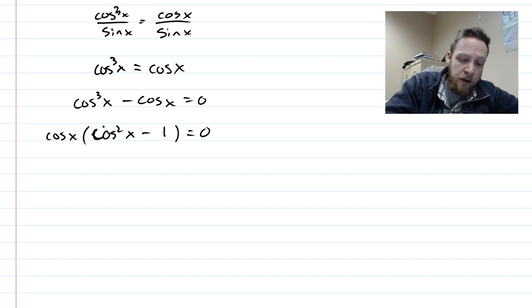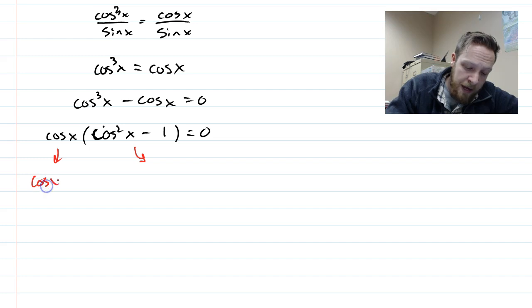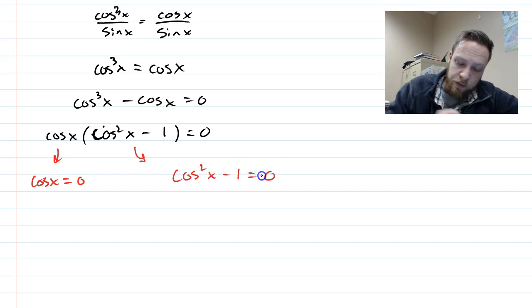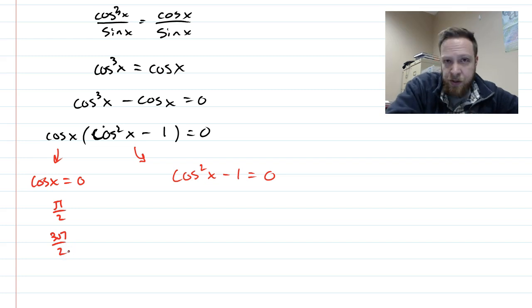But once it's factored, you're going to use the zero product property. If it's equal to 0, then each of these factors tells us different answers. So, we're asking, when is cosine of x equals 0? Also, when is cosine squared minus 1 equals 0? So, we're going to have a lot of answers. When is cosine of x 0? Thinking of your unit circle, that would be at pi over 2. And then the other answer would be at 3 pi over 2. That's just on one rotation of the unit circle.